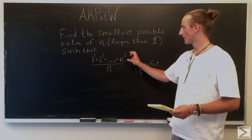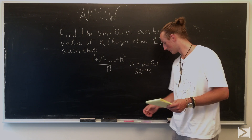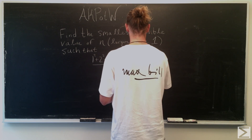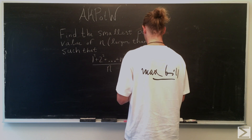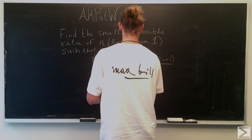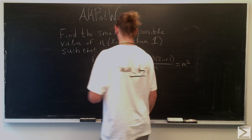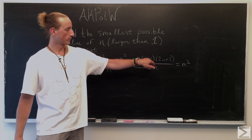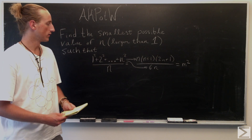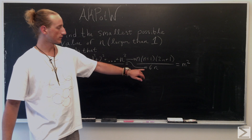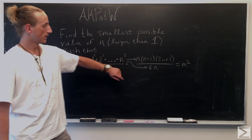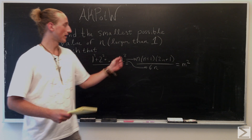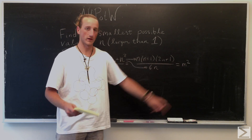We can start by simplifying this numerator. Simplifying gives us n times (n+1) times (2n+1) all over 6 for the top, and then putting in the bottom n. We want that to be a perfect square, so we're going to call that k squared.